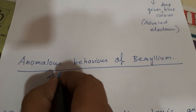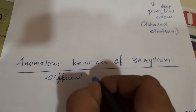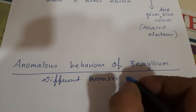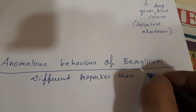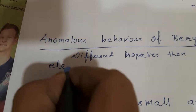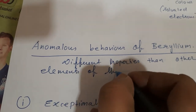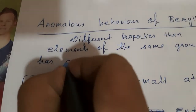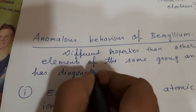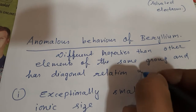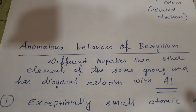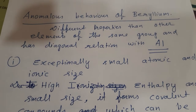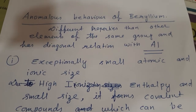So, beryllium has different properties than other elements of the same group and has a diagonal relationship with aluminium. Beryllium's size is very small — it has an exceptionally small atomic and ionic size.